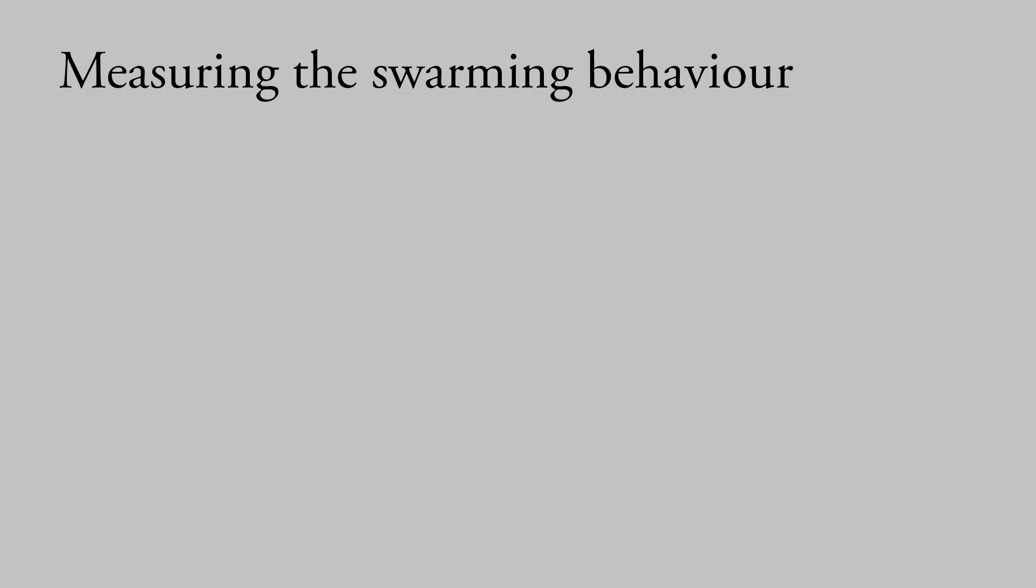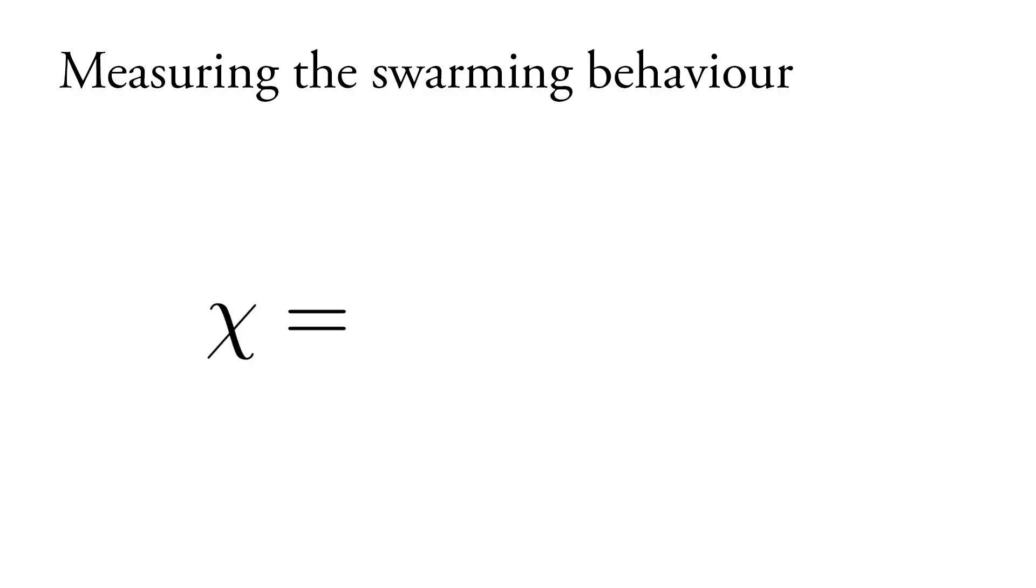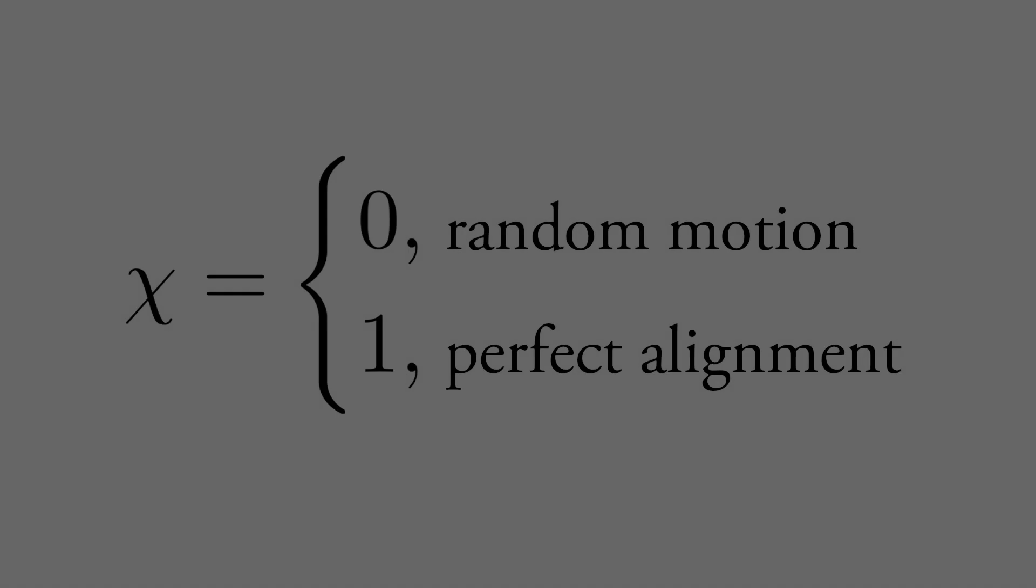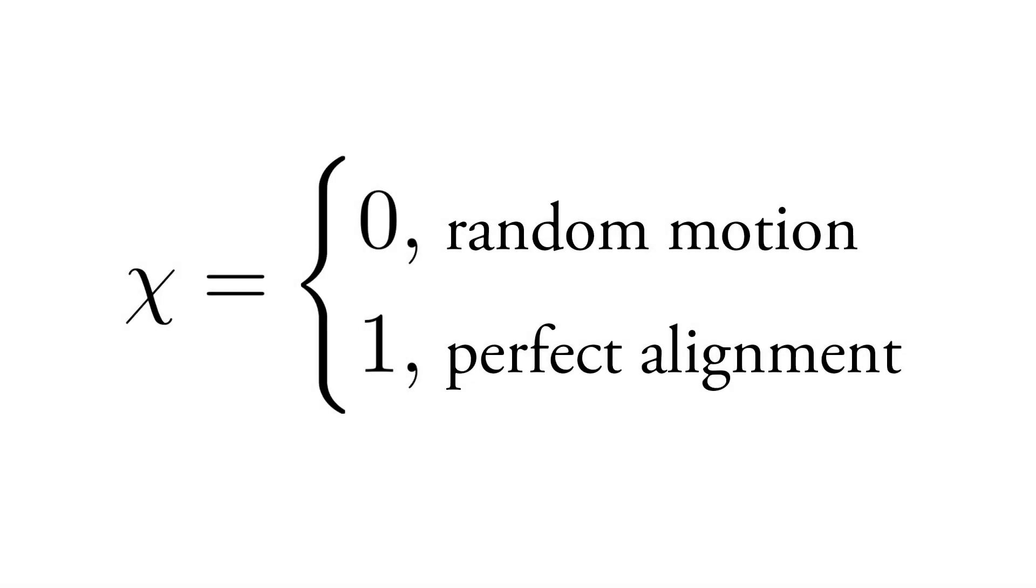This transition can be studied by introducing an order parameter which distinguishes swarming behavior from random motion. To quantify this, we look at the distribution of directions of all the birds in the simulation. We add up all these direction vectors and divide by the total number of birds. This gives us the order parameter, the velocity correlation. If the motion is random, then there is no correlation in the velocities and the order parameter is 0. If all birds are aligned, the order parameter has the value 1.